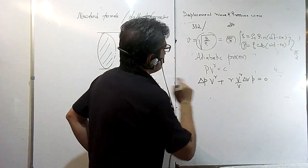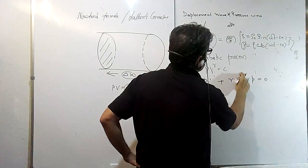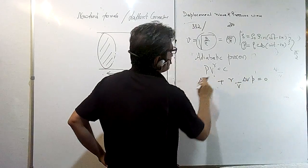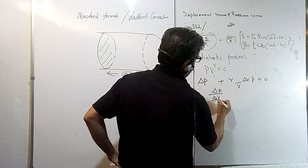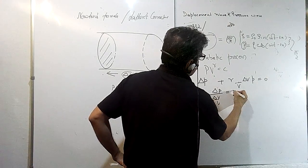Now we can remove this from here; that gets cancelled. So I can write as ΔP upon ΔV upon V into minus is γP.